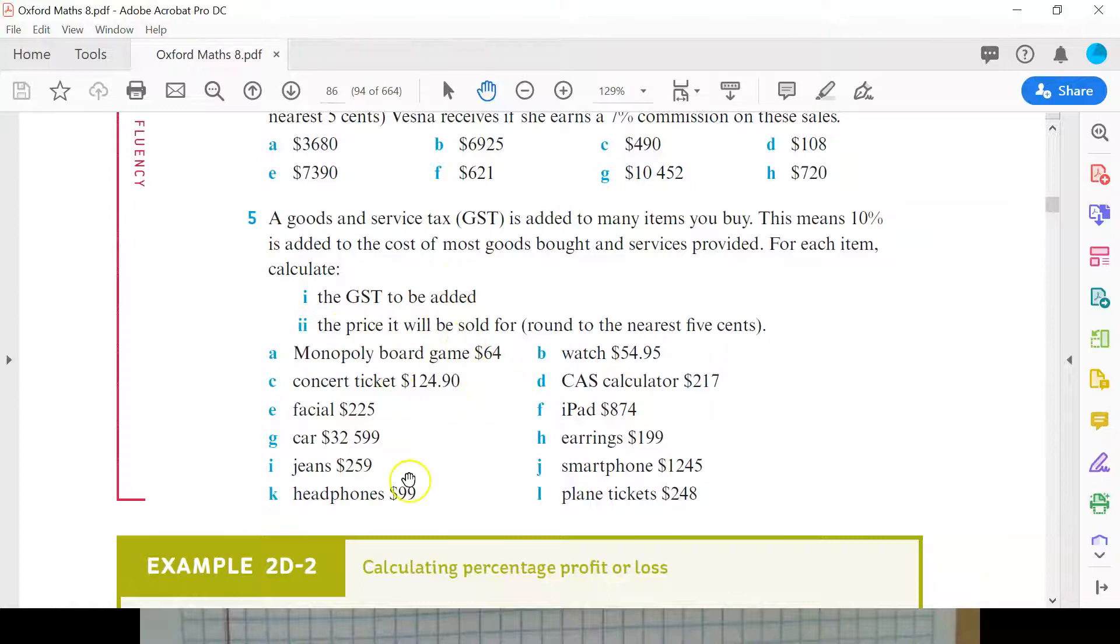So goods and services tax is what GST stands for, is added to many items you buy. This means 10% is added to the total cost of goods and services provided for each item. Calculate the GST to be added and the price it will be sold for. So we're not going to do all of them. Does anyone have a particular preference in the item that they want to do here? The concert tickets? No. No one wants to do the calculator? What about the earrings? I do love Monopoly. All right. We're going to do car. Car is going to be a fun one.